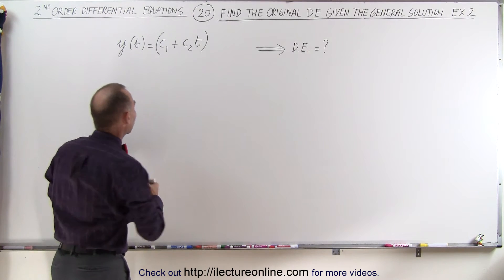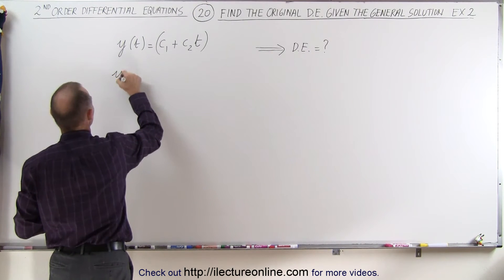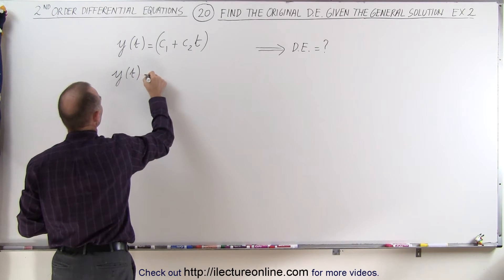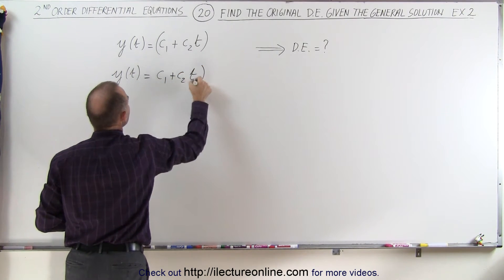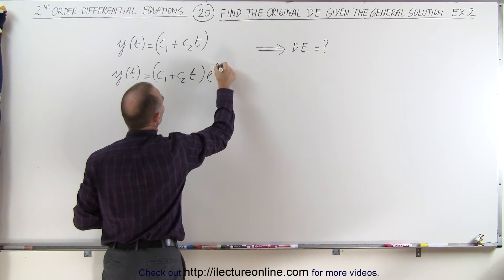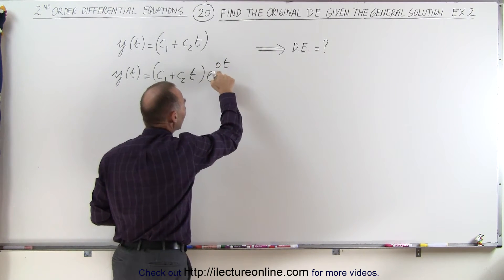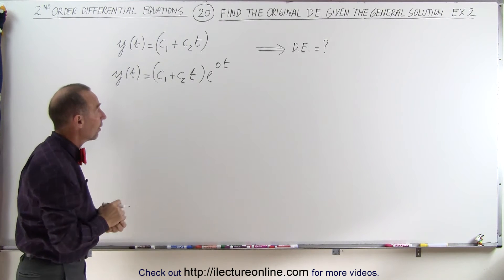Then, if we rewrite this a little bit, if we write this like this, y as a function of time is equal to c₁ plus c₂t times e to the 0t, then we realize the repeated root is actually equal to 0.